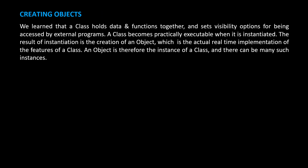Creating objects: We learned that a class holds data and functions together and sets visibility options for being accessed by external programs. A class becomes practically executable when it is instantiated. The result of instantiation is the creation of an object, which is the actual real-time implementation of the features of a class. An object is therefore the instance of a class, and there can be many such instances.